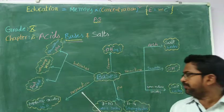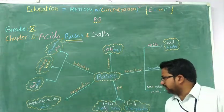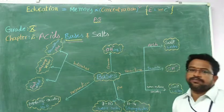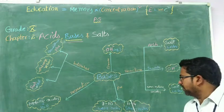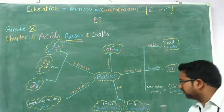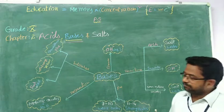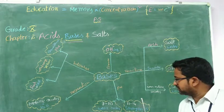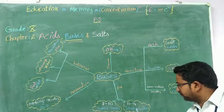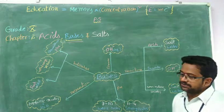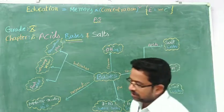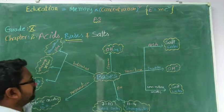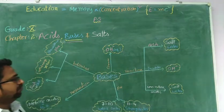Then, what about the pH values? If the pH is 7 to 10, those are weak bases. If the pH is 11 to 14, strong bases. So it is about a mind map regarding the bases. You can build your own by adding a few more things also.